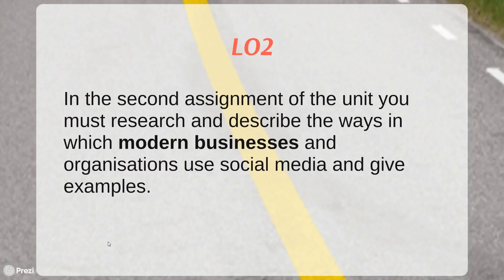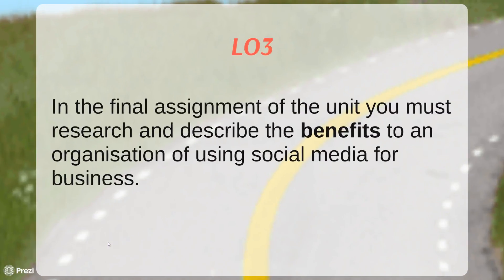Once you've done the first assignment, you'll be on to the second assignment, which covers LO2. In the second assignment, you must research and describe the ways in which modern businesses and organisations use social media and give examples. That's what takes things forward — you then start talking not about how individuals use social media, but how businesses do. The final assignment covers Learning Outcome 3: the benefits to an organisation of using social media. The unit starts talking about individuals and works businesses into it as the assignments go on.